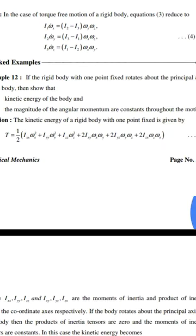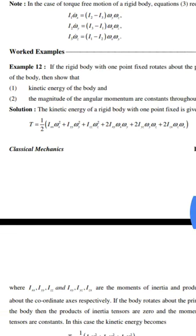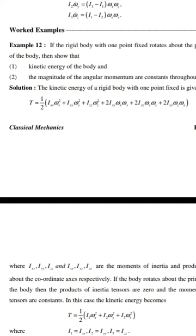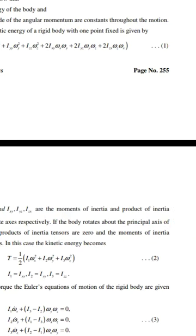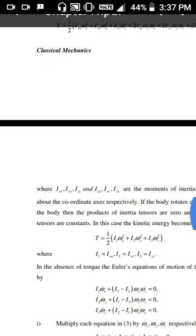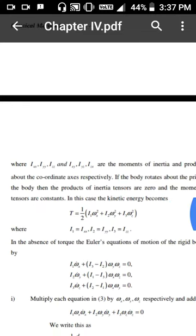The kinetic energy of a rigid body with one point fixed is given by T equal to 1/2 times (Ixx·ωx² + Iyy·ωy² + Izz·ωz²) plus cross terms involving Ixy, Iyz, Ixz. Here Ixx, Iyy, Izz are the moments of inertia and Ixy, Iyz, Ixz are the products of inertia about the coordinate axes respectively.